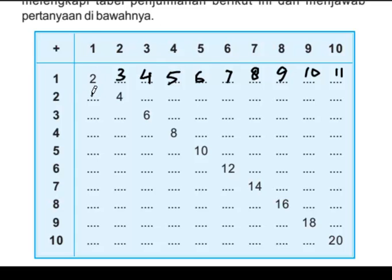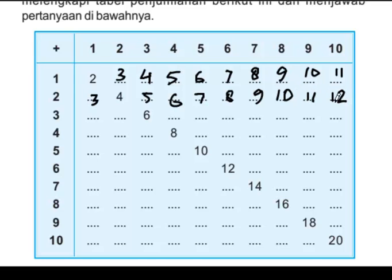Dua ditambah satu: tiga. Dua ditambah dua: empat. Dua ditambah tiga: lima. Dua ditambah empat: enam. Lanjut: tujuh, delapan, sembilan, sepuluh, sebelas, dua belas. Tiga ditambah satu: empat. Tiga ditambah dua: lima. Lanjut: enam, tujuh, delapan, sembilan, sepuluh, sebelas, dua belas, tiga belas.